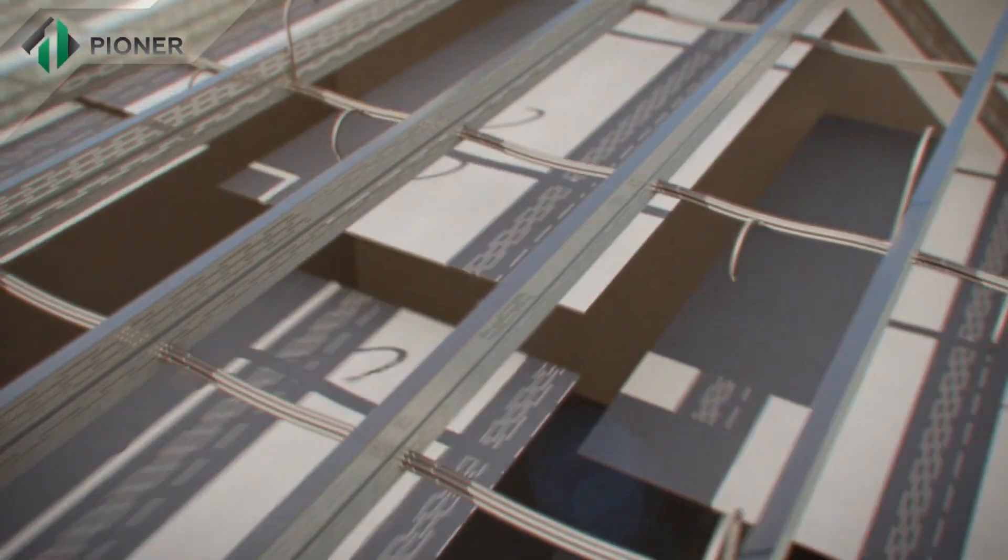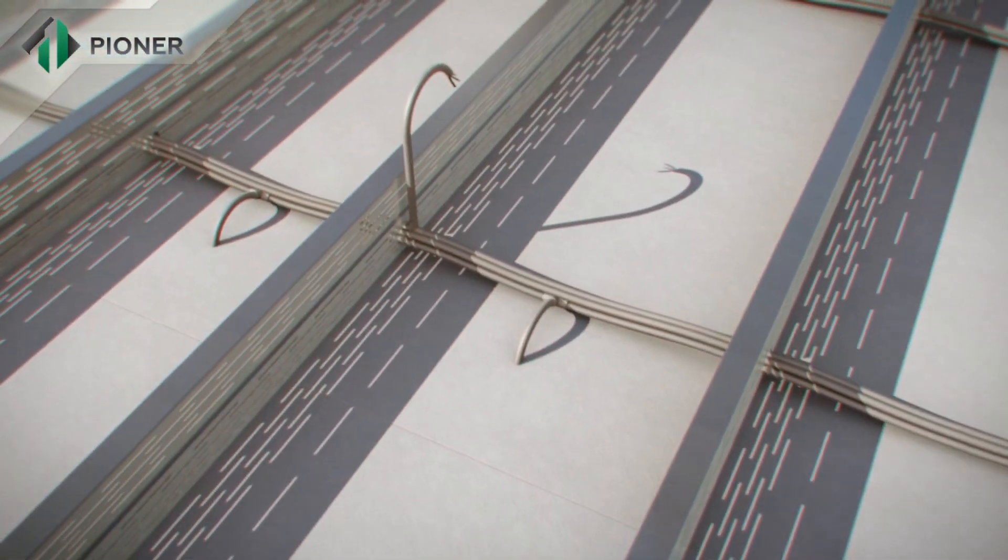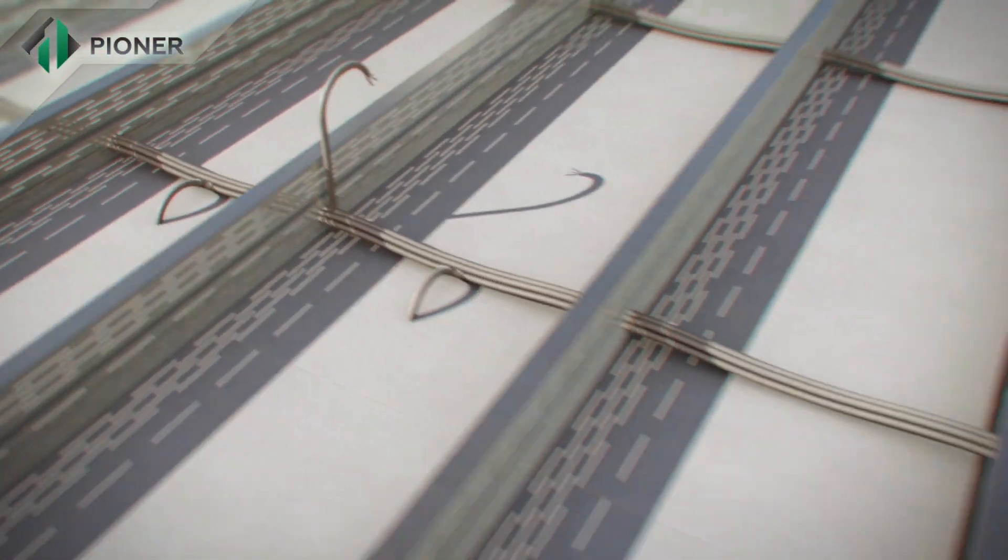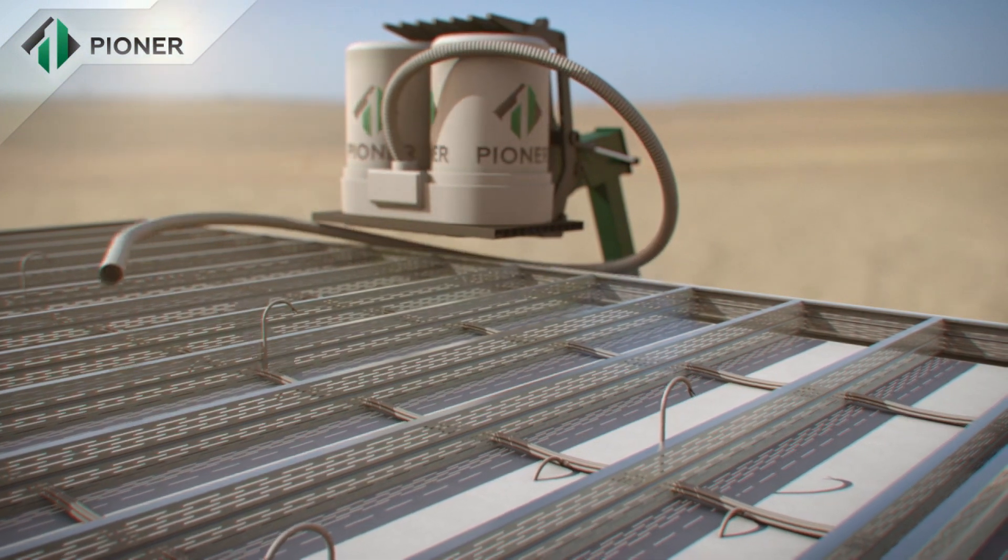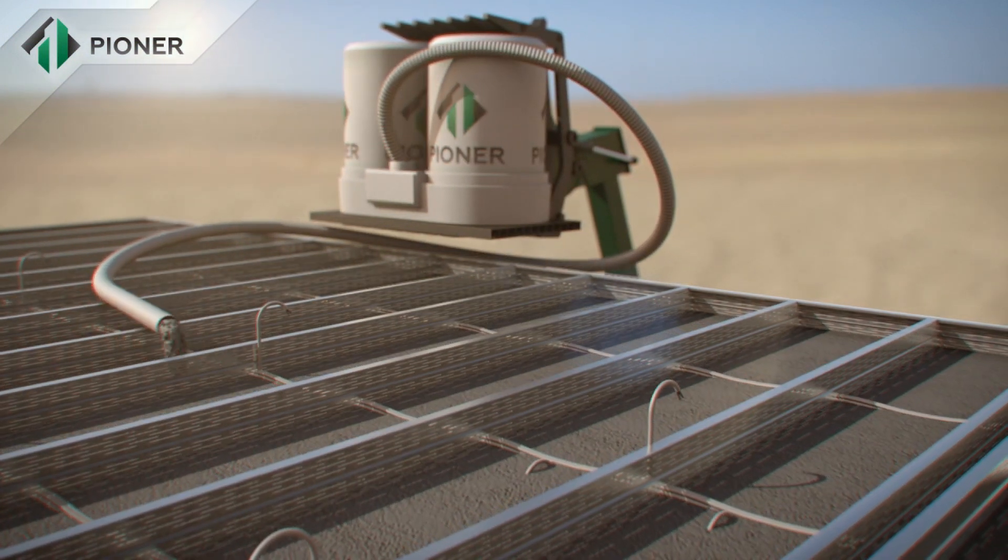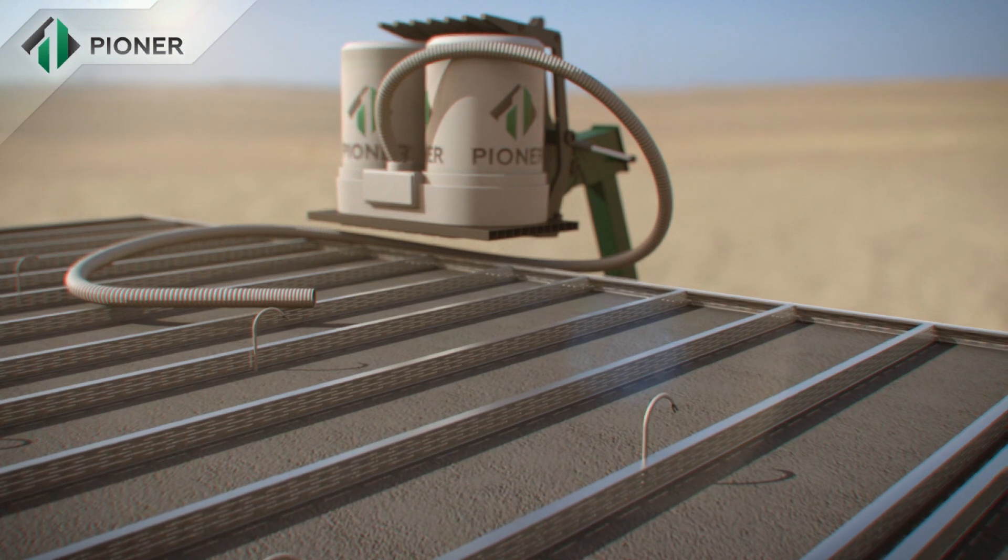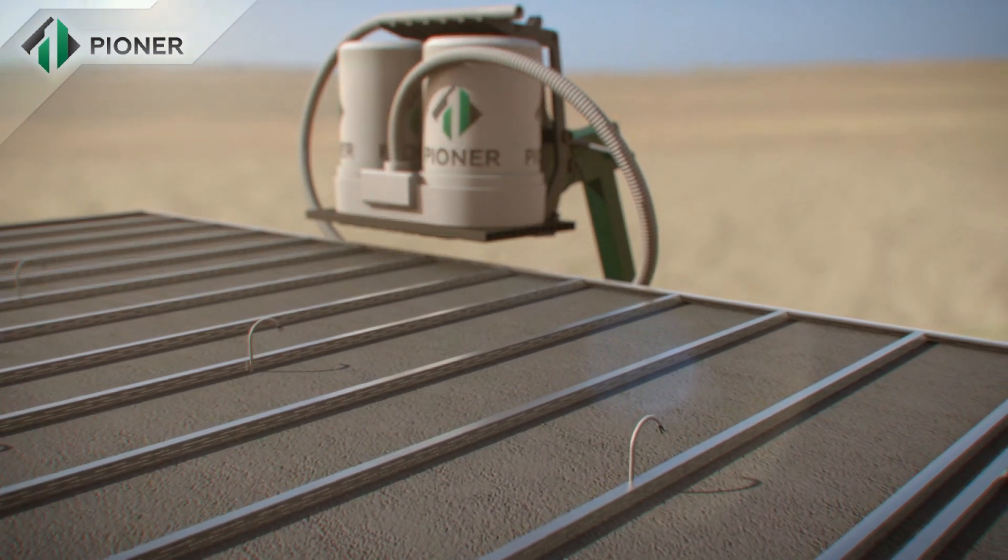Horizontal slabs and flat roofs fixed by Pioneer technology are mounted in a way similar to that for vertical walls. The panels are fixed to a metal frame and the Pioneer mix fills up the space and rises to the required level.